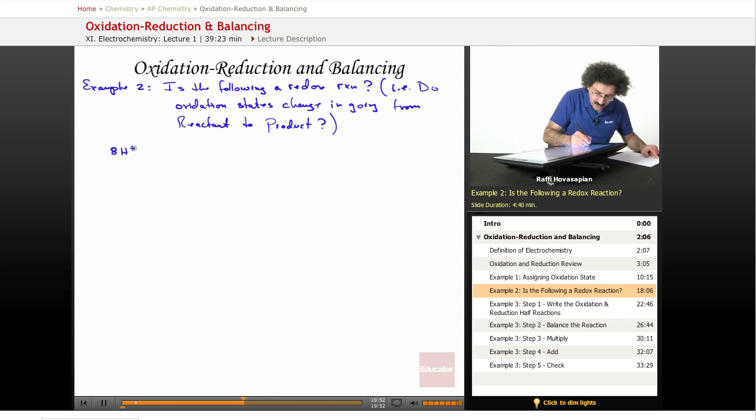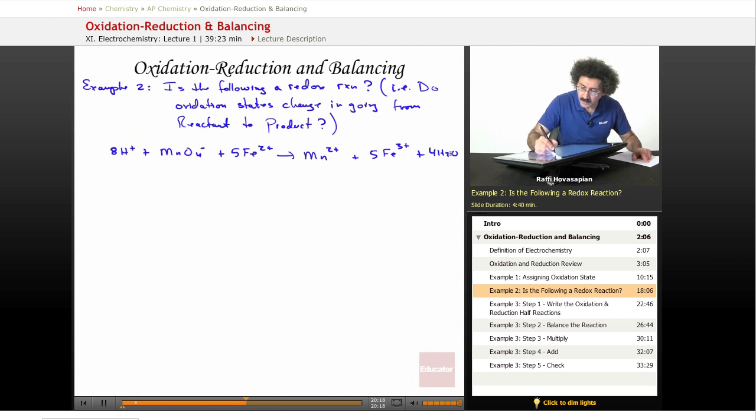So let's do 8H+, and don't worry about how this looks. It's a perfectly good equation. MnO4-, this is what I was talking about. Some of these can look really weird. Don't let the symbolism scare you. So you're presented with this equation, and you're asked, is the following an oxidation reduction reaction? Well, I have to assign oxidation states. Let's do it, just like we did in the previous example.